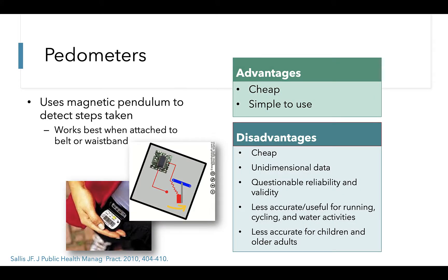Pedometers provide us with basic step count data. An advantage of this measure is that it is cheap and easy to use, but pedometers only provide data on steps and not other dimensions of movement and can have questionable reliability and validity. We also know that they are less accurate for certain activities such as running, cycling, and water activities, and they can be less accurate for special populations.